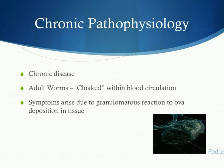Schistosomiasis is really a chronic disease. The adult worms, whether living in the mesenteric or perivesicular plexus, don't actually cause any symptoms. The worms take in proteins from their host and effectively become invisible — to use a sci-fi term, they cloak themselves against the immune system within the blood circulation. Symptoms only arise due to ova deposition in tissue and the subsequent immune and granulomatous reaction that the host provides.